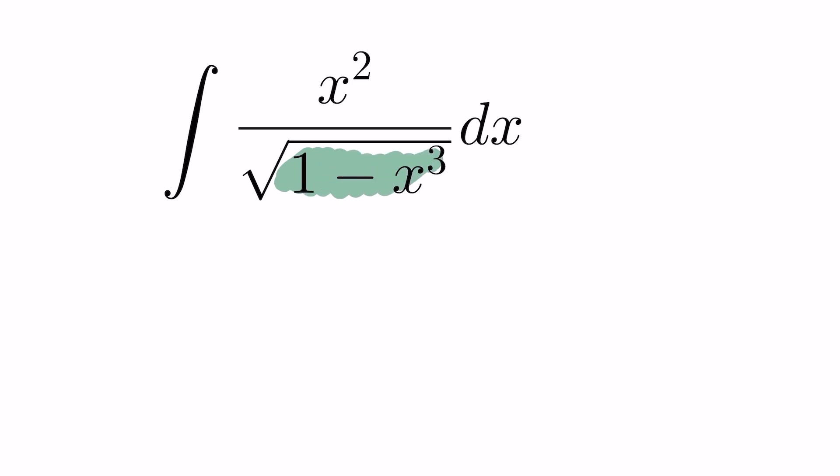When you're looking at this one here, if you'll notice the denominator, I have 1 minus x cubed. In the top, I have an x squared. Well, the derivative of this has an x squared in it, so that's a good indication that a substitution would work for something like this.